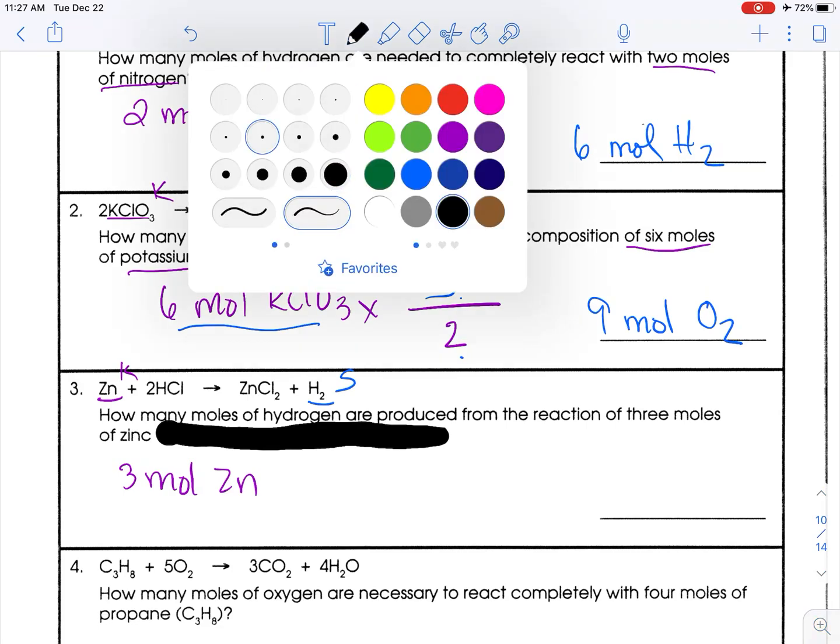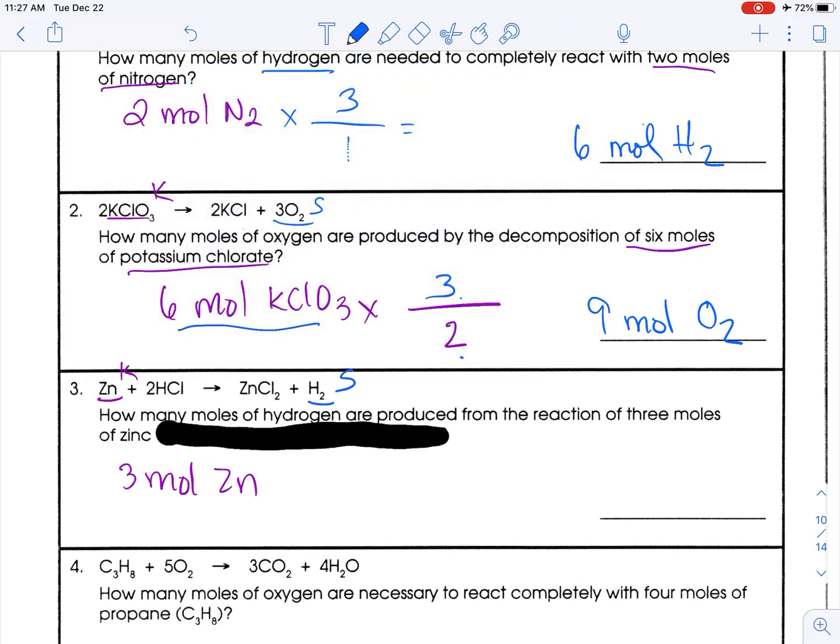Three moles of zinc is what I was given. I'm going to react it with what I seek over what I know. The coefficient of what I seek is one. Nothing is written, so it's one. And what I know is also a coefficient of one. Three times one is three divided by one is also three. But we're not going to deal with zinc anymore. We're dealing with hydrogen.